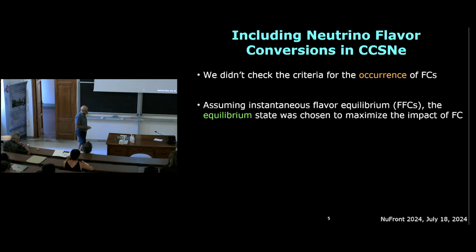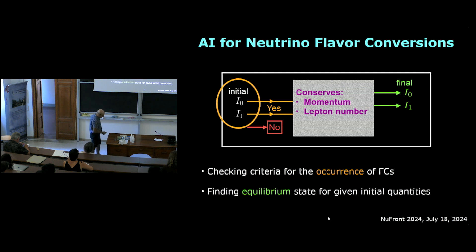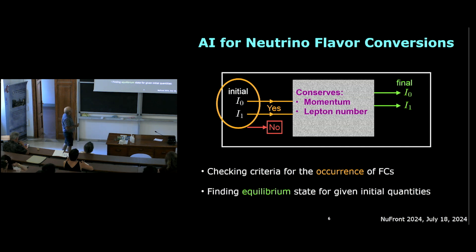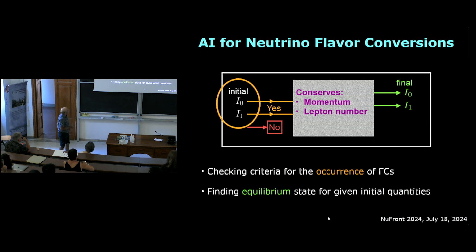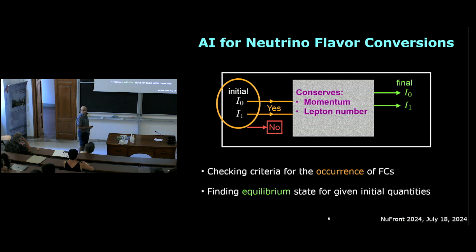So now let's see how AI can help. In principle, what we need is a black box module in our supernova code which takes some initial values of neutrino-related quantities — specifically I0 and I1, which I'll explain shortly. First, it should decide if flavor conversion exists or not — for fast flavor conversions this is one level of AI-related work. If it does exist, another black box should return the final equilibrated values of these quantities, respecting physical conservation laws.